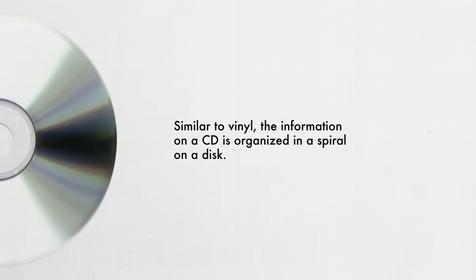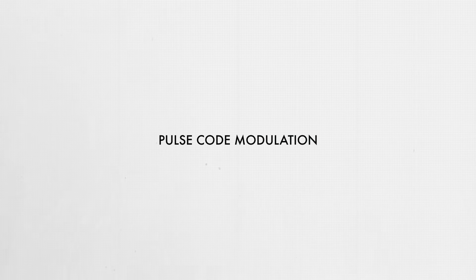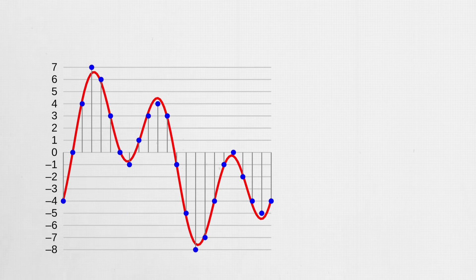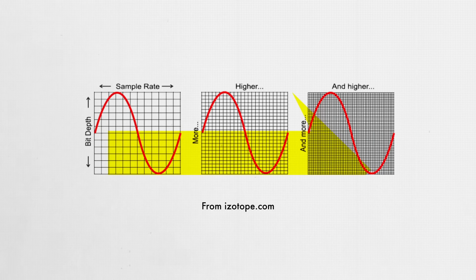To help you understand the nature of a digital audio signal, let's take a step back and think about a CD. Similar to a vinyl record, the information on a CD is organized in a spiral on a disc. However, being a digital audio format, a CD encodes the audio as PCM, or pulse code modulation. The audio on a CD has a 16-bit depth and a sample rate of 44.1 kHz, meaning every second there are 44,100 samples for both the left and right channel, with each sample consisting of 16 bits, and each bit representing a zero or a one.